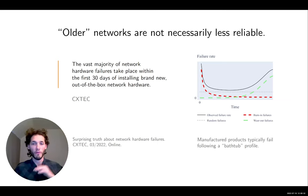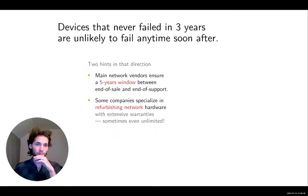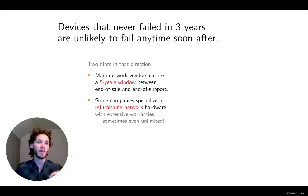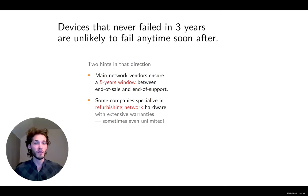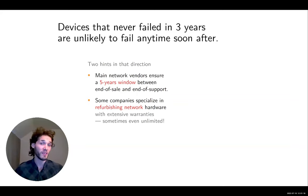When you deploy new hardware there are always some units with manufacturing defects that fail early. But once you're past that period, you fall down to a very low plateau of random failures until aging kicks in. We have the intuition that devices that never fail in three years are very unlikely to fail anytime soon after that. Two hints support this: first, major network vendors like Juniper and Cisco typically provide a five-year support window after end of sale. Second, there are companies that specialize in deploying and maintaining second-hand networks with good warranties.